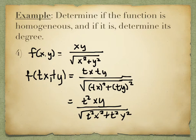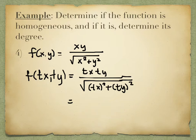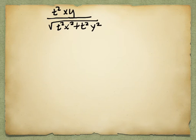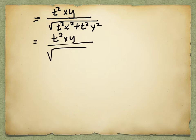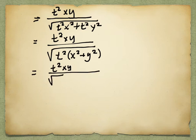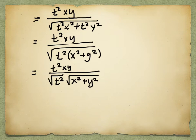The denominator has a t² in both pieces underneath the radical, so we can factor it out. Then we can separate the square roots because it's multiplication — we can't do it with addition or subtraction, but these are multiplied together. The square root of t² is t, so that t in the denominator cancels with one of the t's in the numerator, leaving t times xy over the square root of x² plus y².